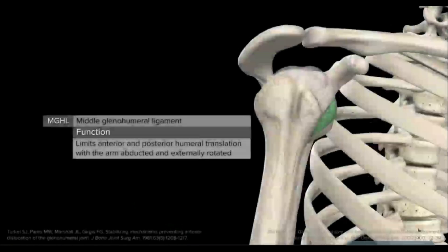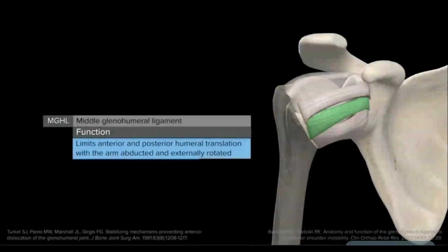The MGHL functions to limit both anterior and posterior translations of the humeral head with the arm abducted and externally rotated. It also may serve as a secondary stabilizer to inferior translation in adduction.